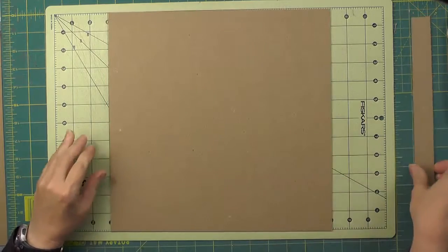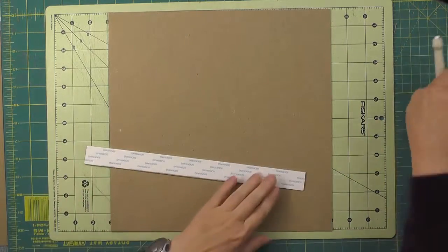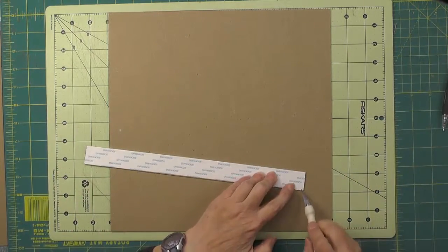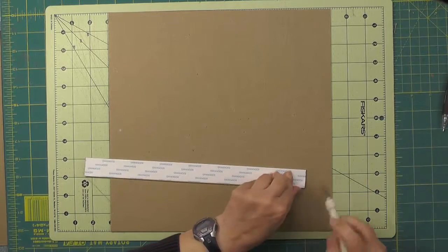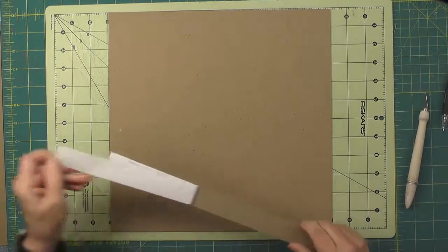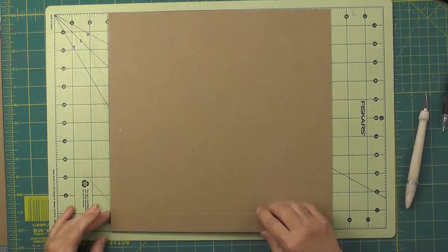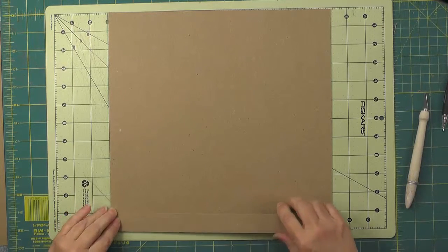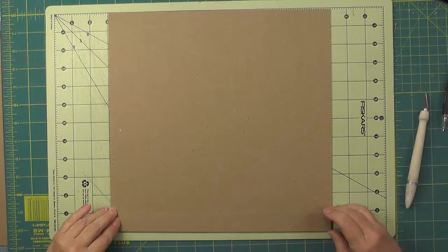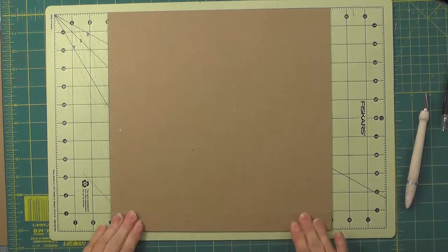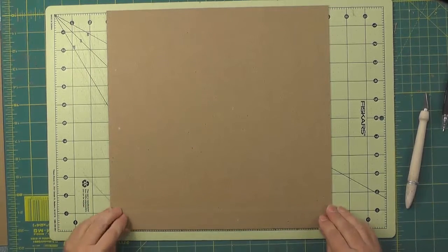I'm going to take this strip of 1 inch that I've prepped with some score tape and remove the backing, and then line it up with this edge that's facing me. I'll give that a good burnish.